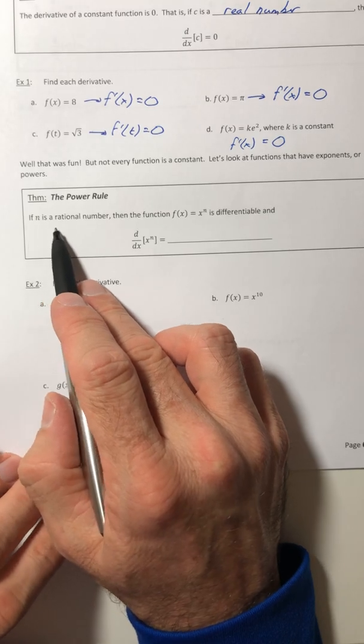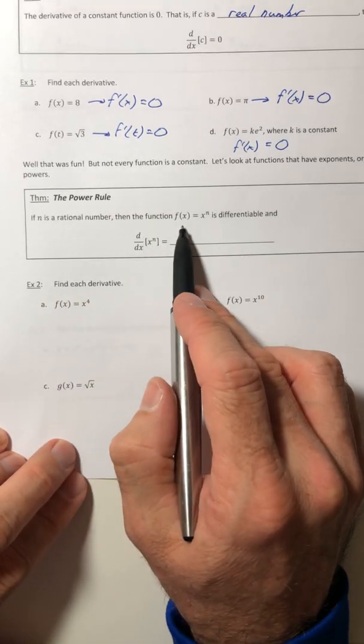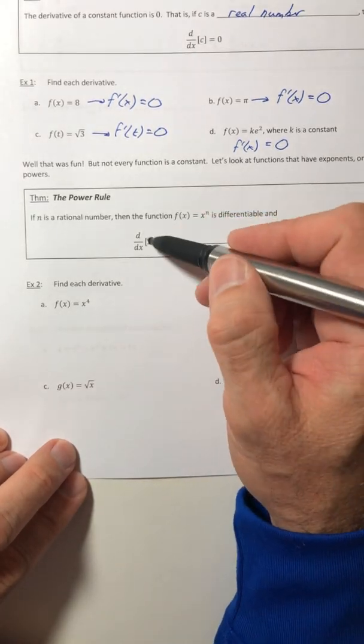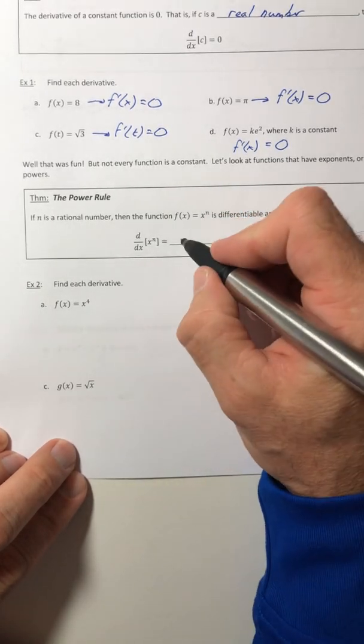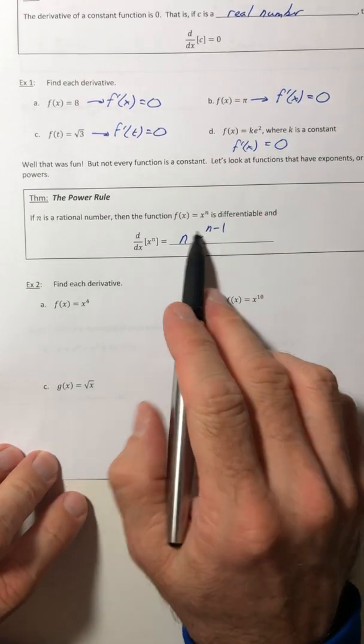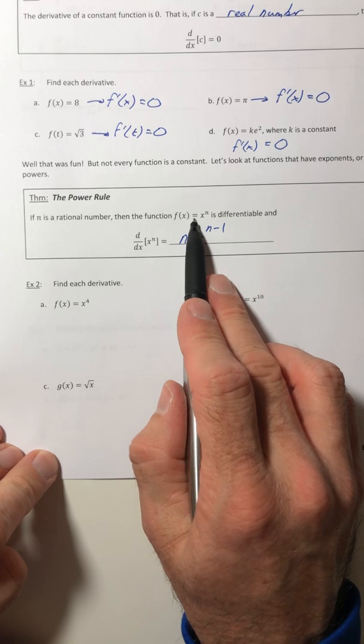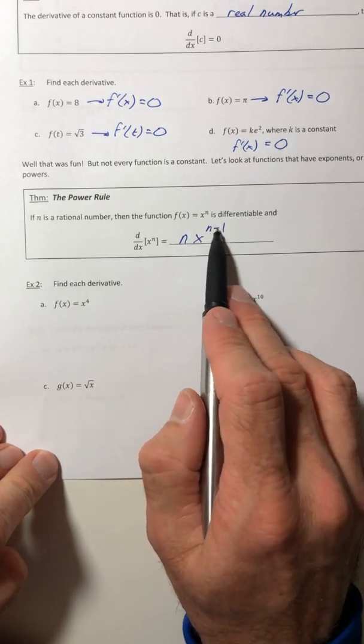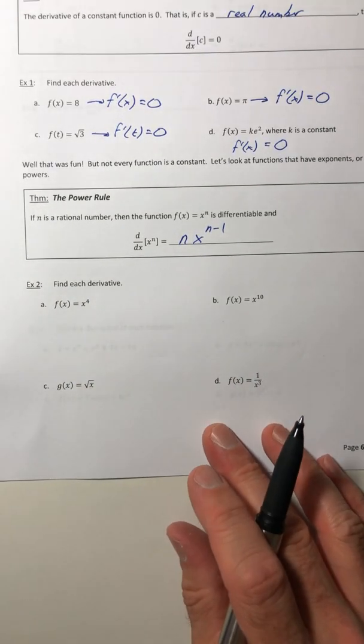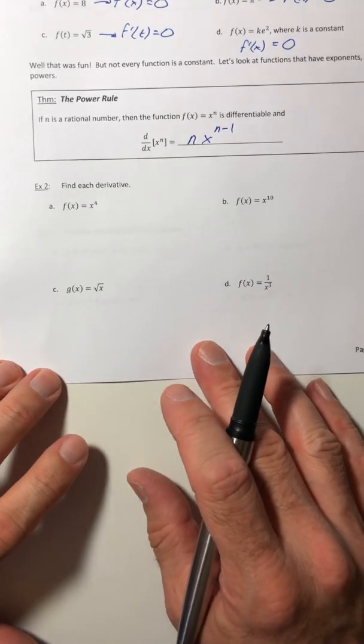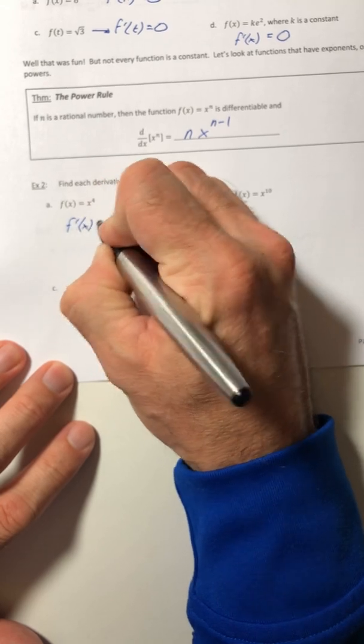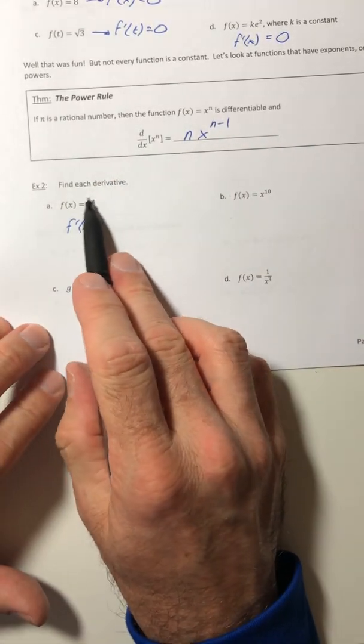If n is a rational number, then the function f of x equals x to the n is differentiable, and the derivative of that x to the n equals n times x to the n minus one. So you pull your exponent down, and then you decrease it by one to give you the new exponent. And that is how the power rule is going to work. So let's try that one out. Find the derivative.